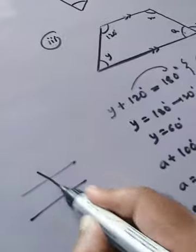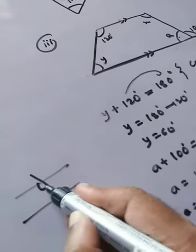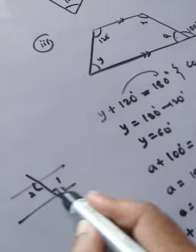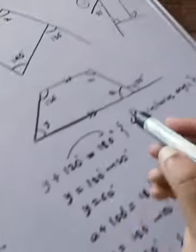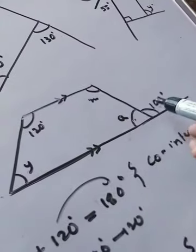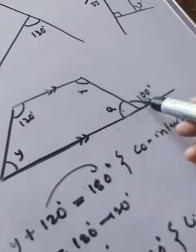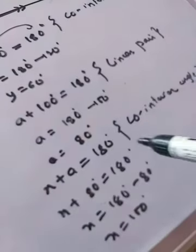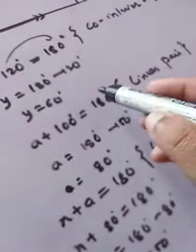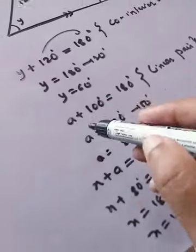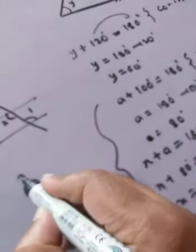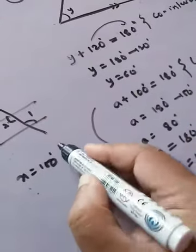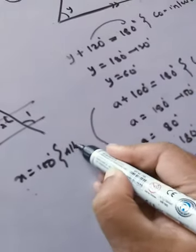Alternatively, we could have used the fact that x and 100° are alternate interior angles. So x can be directly stated as equal to 100° using the alternate interior angles property. If you don't want to take the longer process, you can say x = 100° because they are alternate interior angles.